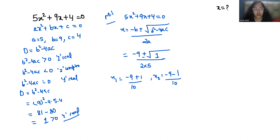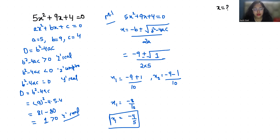So x1 is minus 8 by 10, which equals minus 4 by 5, and x2 is minus 10 by 10, which equals minus 1.